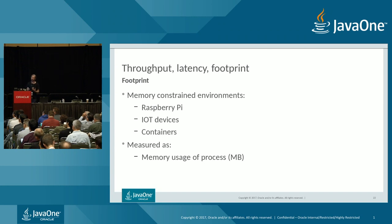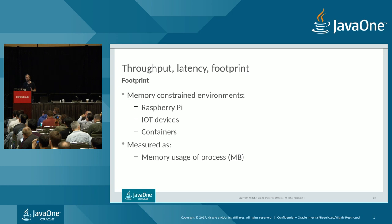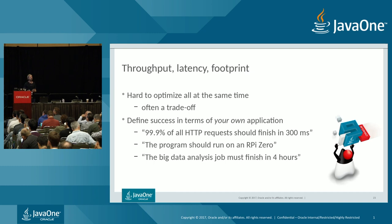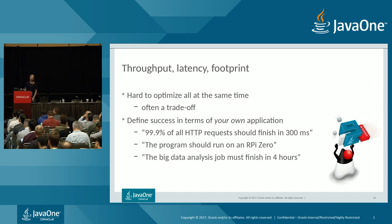Footprint concerns arise in memory-constrained environments — for example, running on a Raspberry Pi, an IoT device, or when packing many JVMs or containers onto a single machine. We measure footprint as the memory usage of a process in megabytes or gigabytes. The challenge is that it's usually hard to optimize for all three properties simultaneously — often you have a trade-off, optimizing for one or two while sacrificing the third.